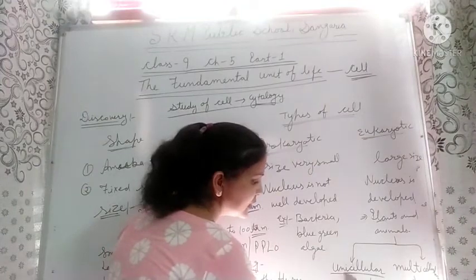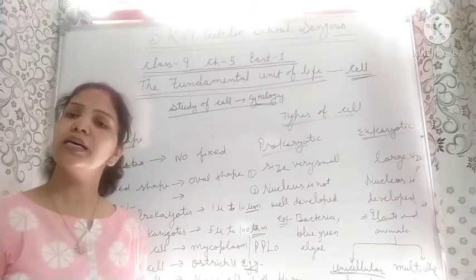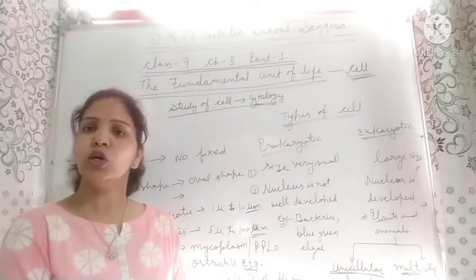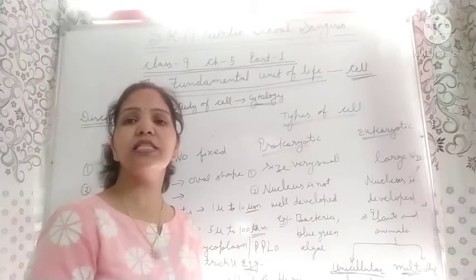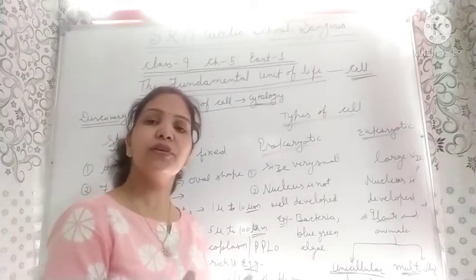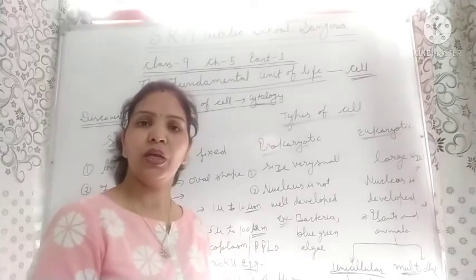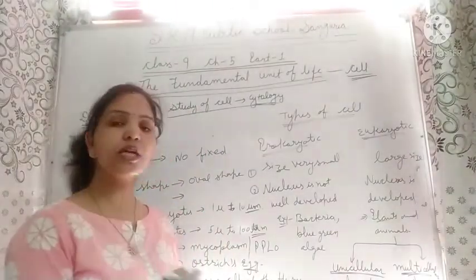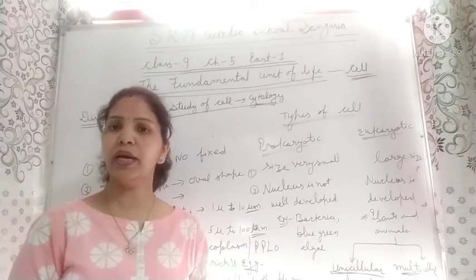In a unicellular organism, it is made up of a single cell, so all functions are performed by that single cell. But in multicellular organisms, there are groups of different cells, so division of labour takes place — different cells perform different functions in different parts of the organism.